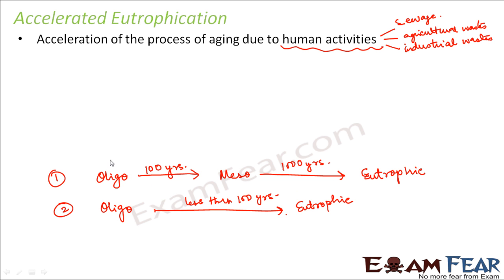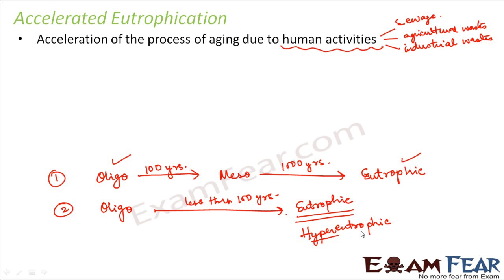Earlier, the conversion from oligotrophic to eutrophic took thousands of years, but now it is even less than a hundred years. In this case, the state reached is not even a eutrophic state — it is a hyper-eutrophic state. That means when the lake is too shallow and the primary productivity has also increased too much, it is said to be hyper-eutrophic.